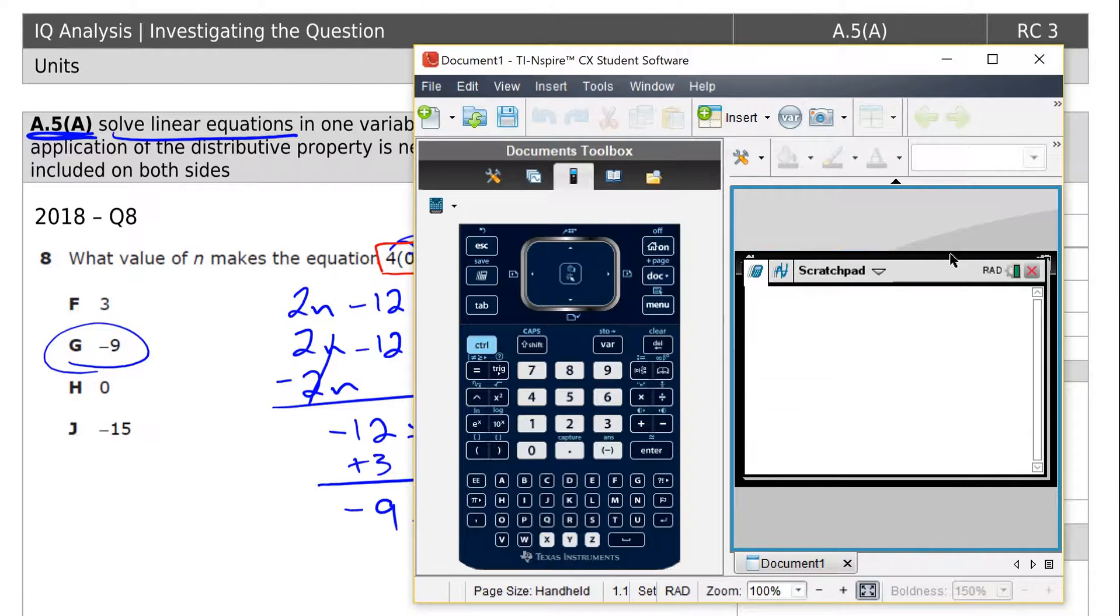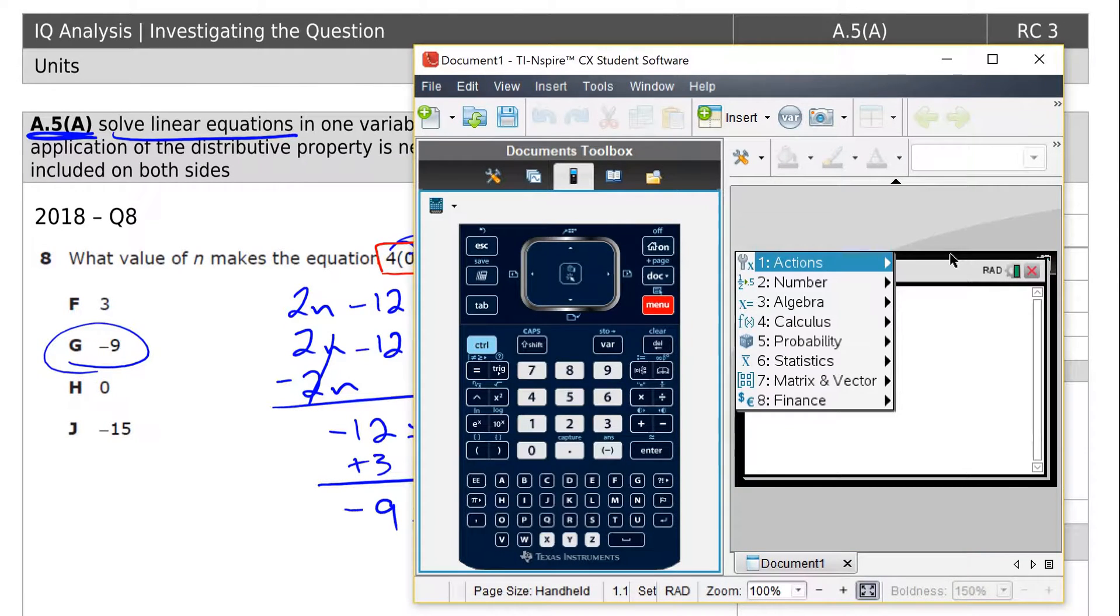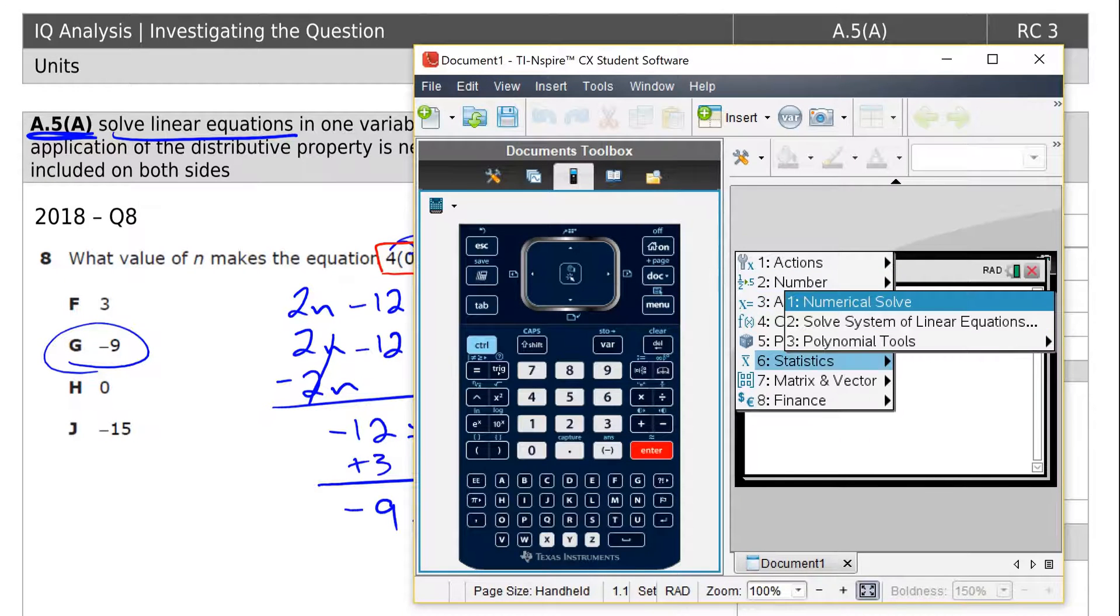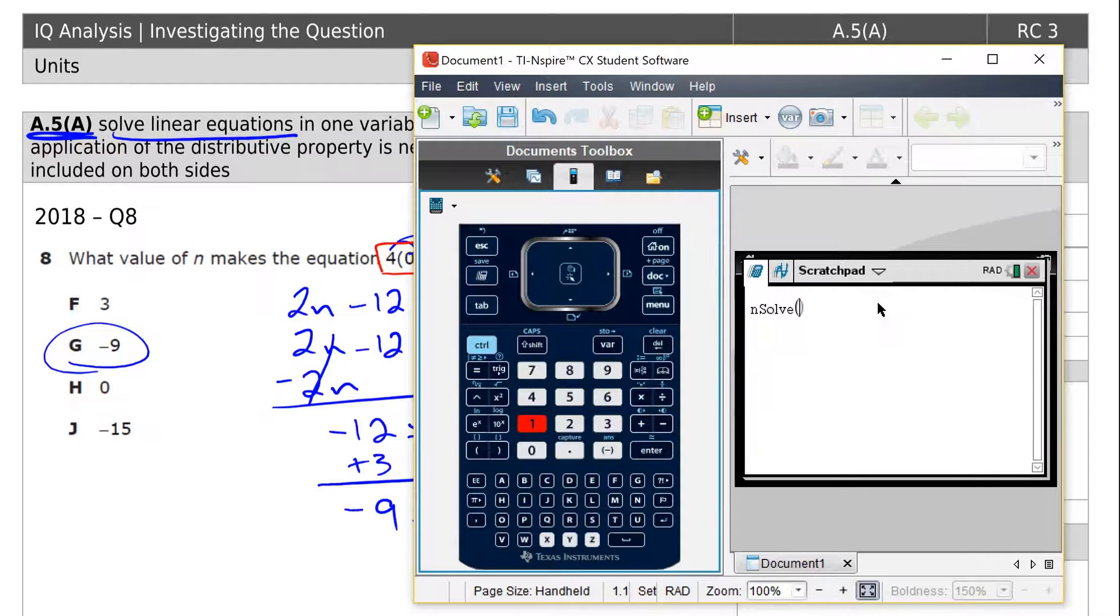So you can get your TI-Nspire. The magic button is menu, so we know what our options are. We go down to algebra, and we are trying to solve, numerical solve, 1.